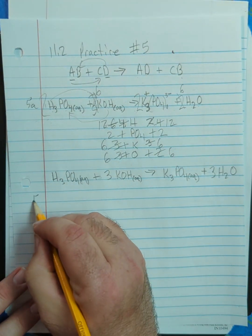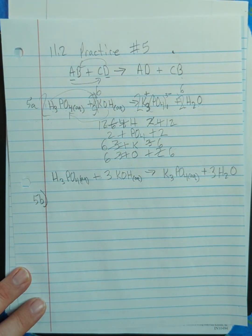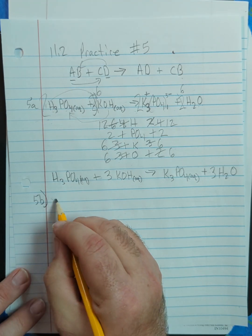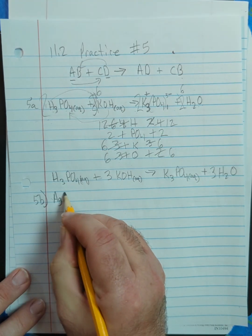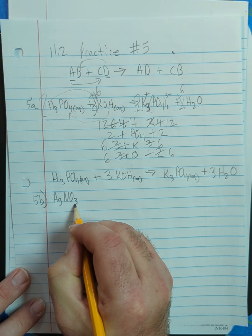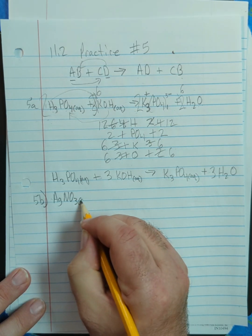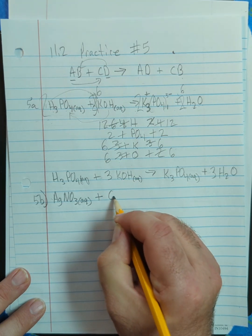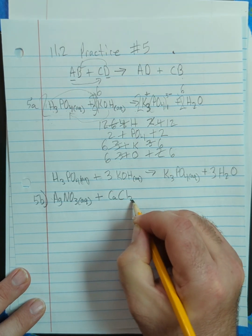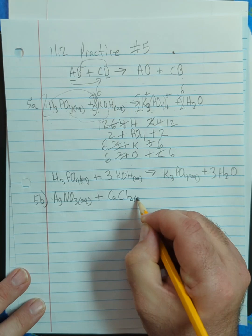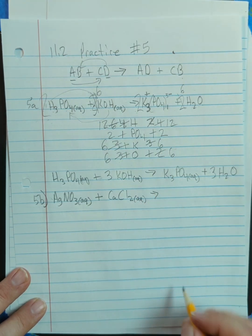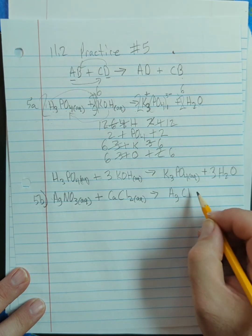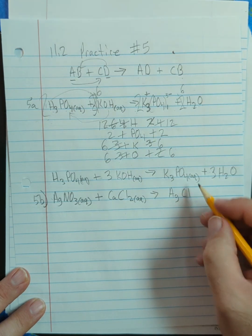So 5B tells us that we have AgNO3 aqueous, plus CaCl2 aqueous, produces. And it tells us that we're going to get silver chloride as a precipitate. That means it's solid.